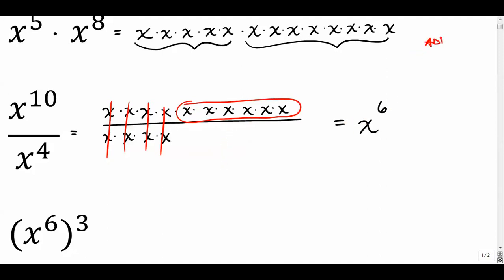So for the first rule we add the exponents — that's a multiplication problem. For the second rule we subtract the exponents — that's a division problem.